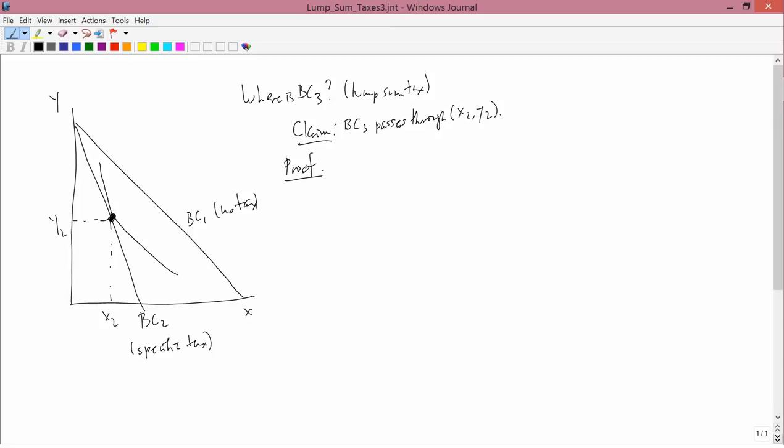We want to know where is BC3, which is the budget constraint for our lump sum tax. The claim is that BC3 passes through X2, Y2. I have to prove that claim. This is going to take a little while.